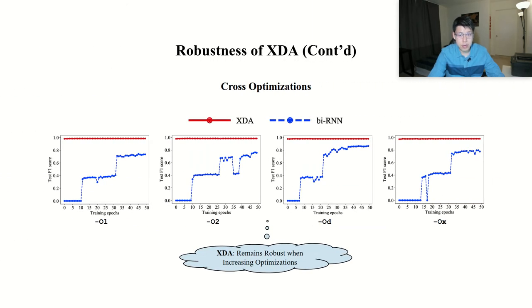Besides the general accuracy, we also evaluate the robustness of XDA. Specifically, across different optimizations, XDA remains high testing F1 scores, where we can see that bidirectional RNN struggles with more aggressive optimization levels. Very interestingly, we also observed that the pre-trained XDA reaches over 95% F1 score within the first training epoch, while bi-RNN struggles to have only zero F1 score within first 10 epochs.